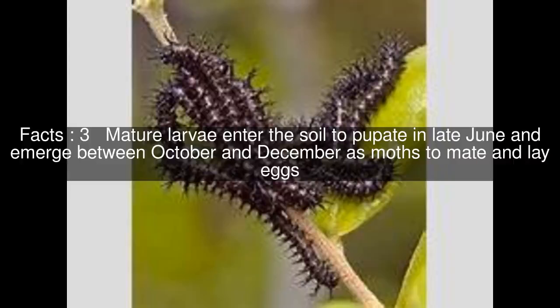Mature larvae enter the soil to pupate in late June and emerge between October and December as moths to mate and lay eggs.